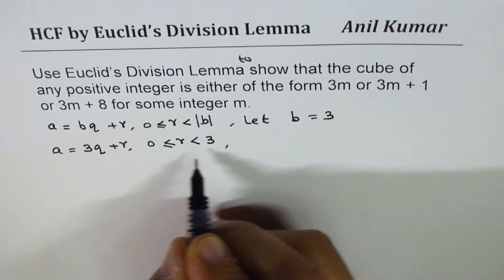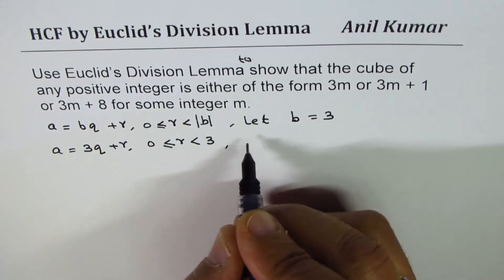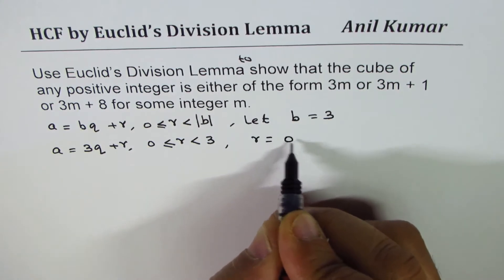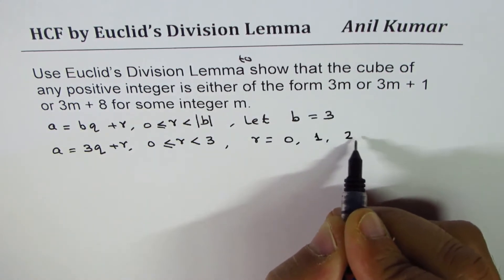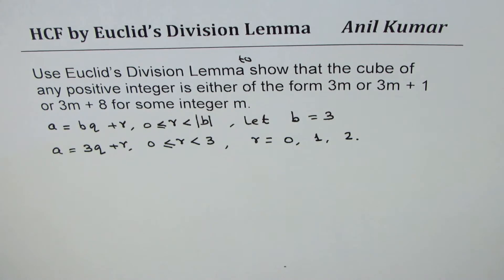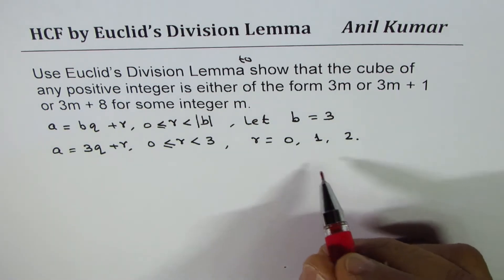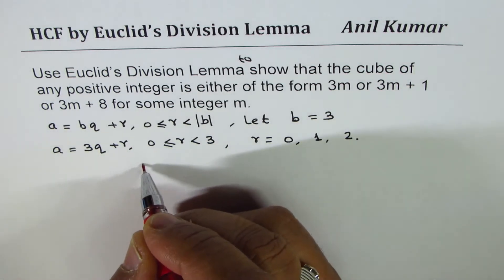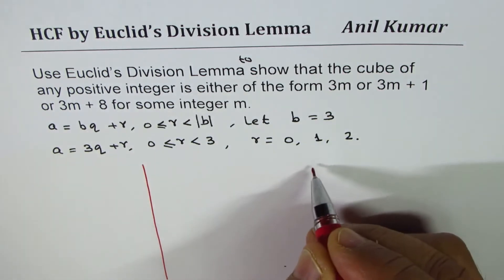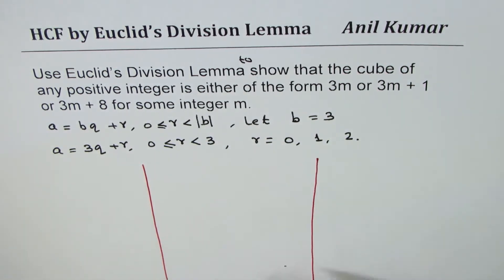Now that gives us possible values of R as equal to 0 or 1 or 2. So that means we are working now with 3 cases. Case 1 when R equals 0, case 2 when R equals 1, and case 3 when R equals 2.